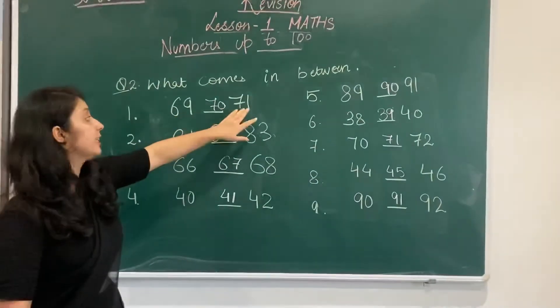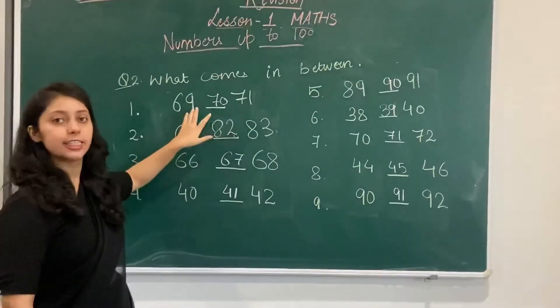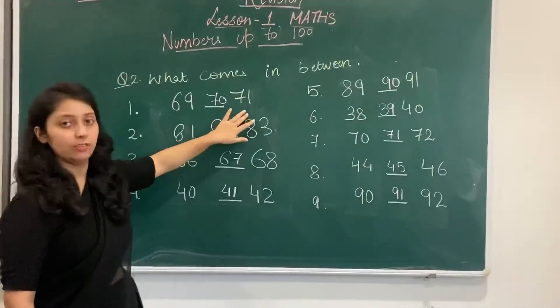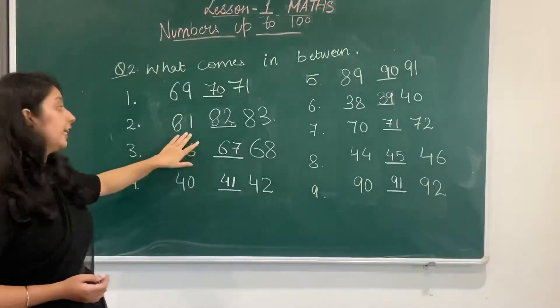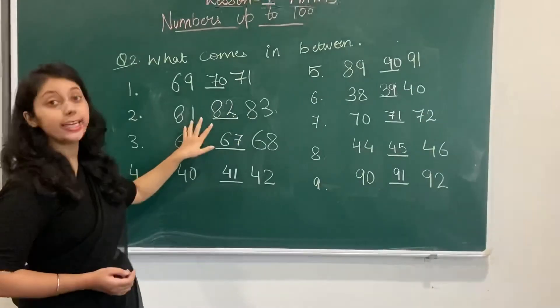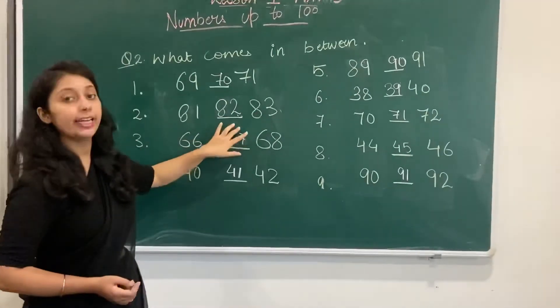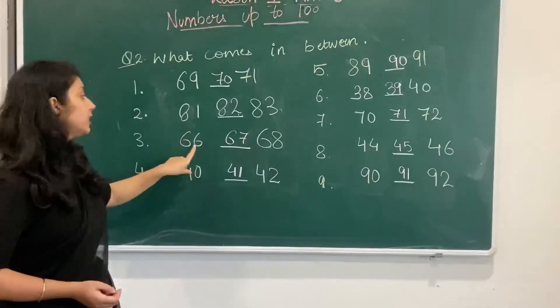The first question is 69, 71. What comes in between? 70. The next question is 81, 83. What comes in between 81 and 83? 82.